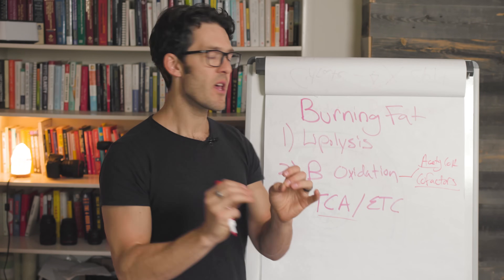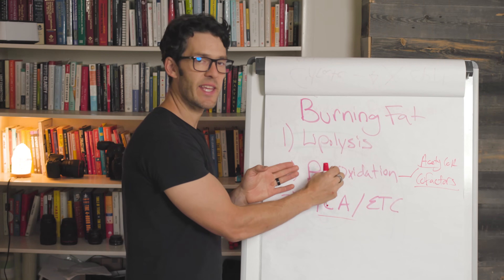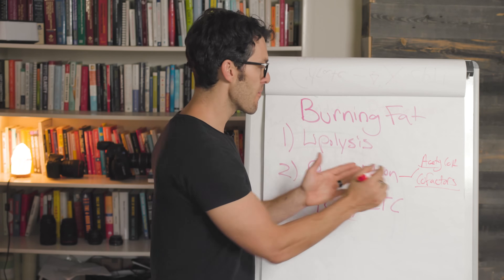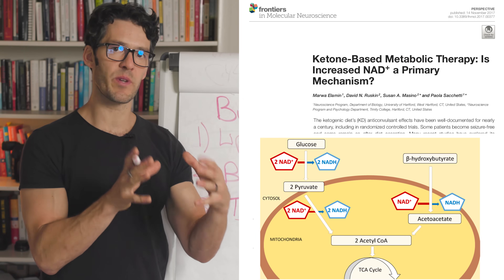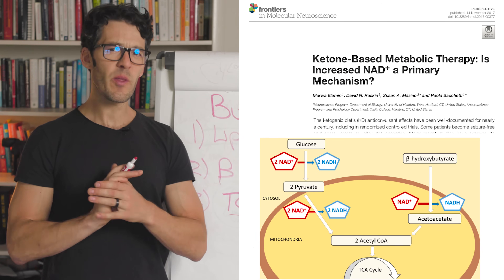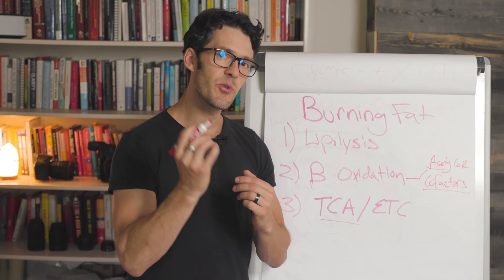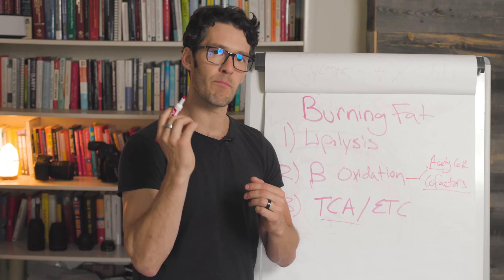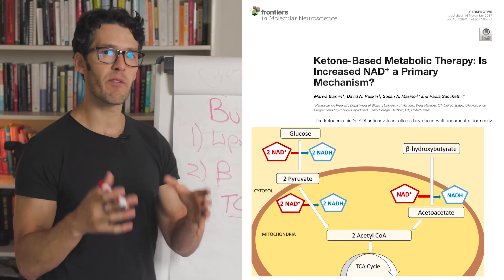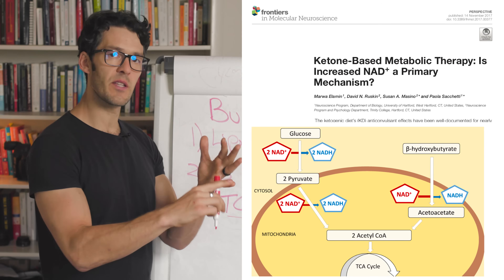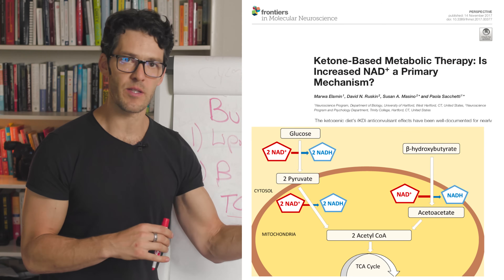Here's the important point. When you oxidize glucose versus when you undergo beta oxidation of fatty acids, you create more beneficial cofactors that affect the cellular redox potential. Your NAD to NADH ratio is more favorably created through oxidation of ketones or fats, and this affects ultimately longevity pathways.